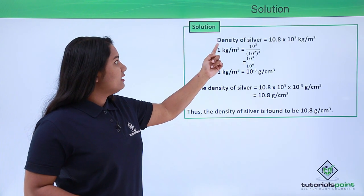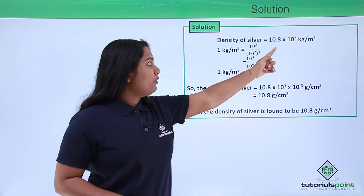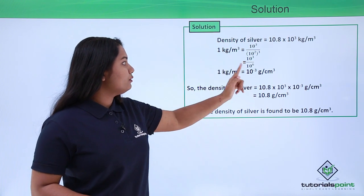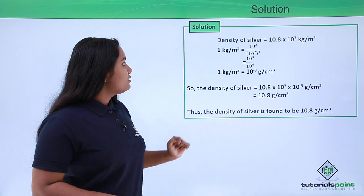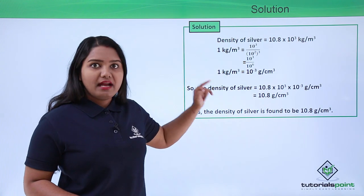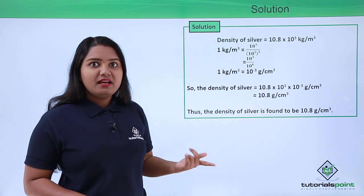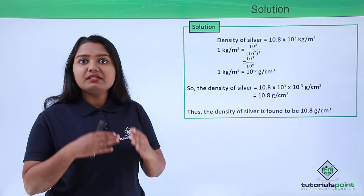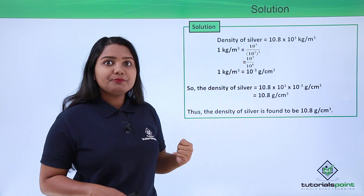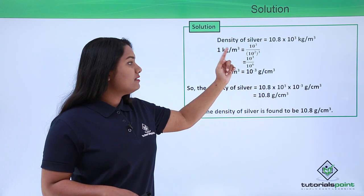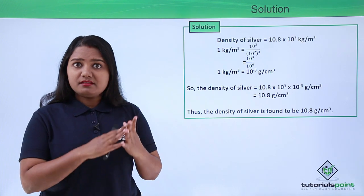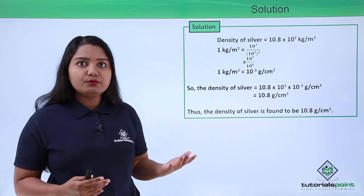The density of silver is 10.8 × 10³ kg per meter cube. We will be converting kg per meter cube into grams per centimeter cube. So we start with 1 kg per meter cube — we need to convert 1 kg into grams and meters into centimeters. We know 1 kg equals 10³ grams, which is 1000 grams, so we put 10³ in the numerator. For the denominator, we convert meters into centimeters; we know that 1 meter equals 100 centimeters, which is 10² centimeters.